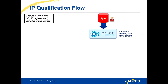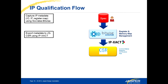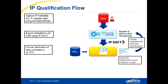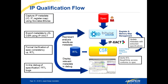The first flow we'll be looking at today is an IP qualification flow. We will capture IP metadata using the Socrates Bitwise tool. The kind of metadata we'll be capturing will include register information, bitfield information, ports, interfaces, etc. We then take that information and export it via IP-XACT to the Jasper Gold CSR app. The Jasper CSR app performs a formal verification of the specification versus the RTL to ensure consistency and coherency between the two, and then we can debug the results using the Jasper Gold tools. We can also extract the results as metadata and update the model in our Socrates tool with the results of the formal verification, essentially producing a full closed loop flow.